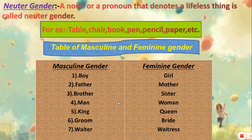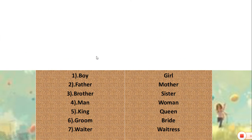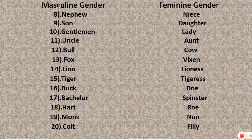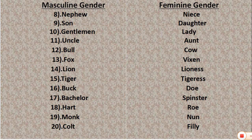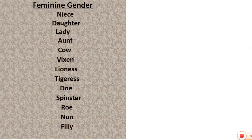The masculine and feminine pairs are: father / mother; brother / sister; man / woman; king / queen; prince / princess; nephew / niece; son / daughter; gentleman / lady; uncle / aunt; bull / cow; fox / vixen; lion / lioness; tiger / tigress; buck / doe; bachelor / spinster; hart / roe; monk / nun; colt / filly.